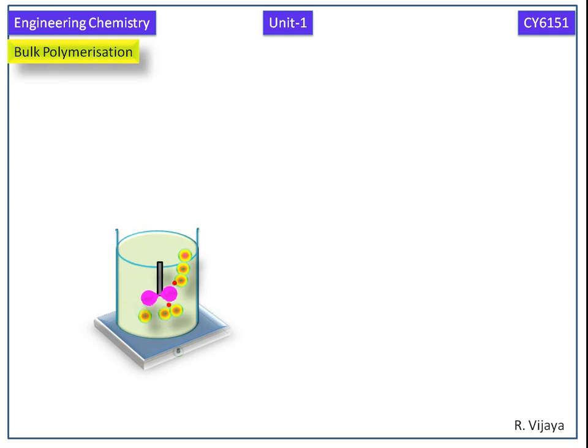The growing chain polymers are terminated. We get the macromolecule of the polymer.